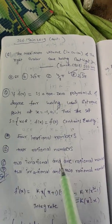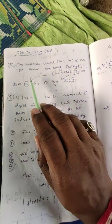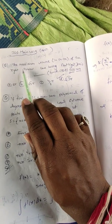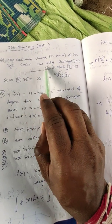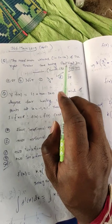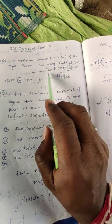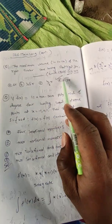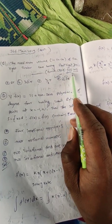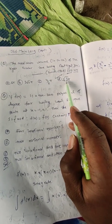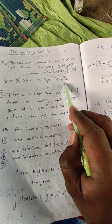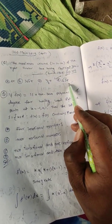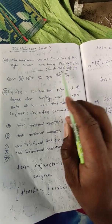Hello students, let us discuss another question asked in 2019. This question asks for the maximum volume in cubic centimetres of a right circular cone having slant height 3 metres. It is a CBSE question asked in 2019 and the answer is 2√3π — I already explained it in the classroom, so I am not explaining this question now.